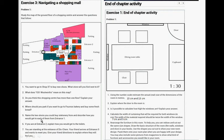Name the two stores you could buy stationery from and describe how you would get to each of them from Entrance 1, which is here. If you are at Entrance 2, explain how you get to the toilets. You are standing at the entrance of this scheme. Your friend arrives at Entrance 5 and wants to meet you. Give your friend directions explaining where they will find you.